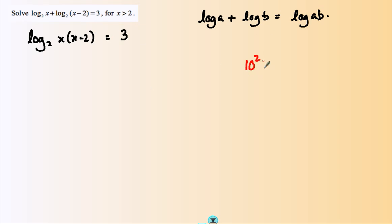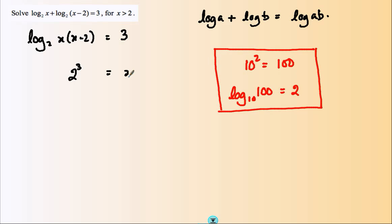I need to remember that logarithms are indices, and I can switch these things around. For example, logarithm to base 10 of 100 equals 2. These are equivalent expressions. A neat way of remembering how to switch it: 10 squared is 100. If I apply the same rule to this, we get 2 to the power of 3 equals x times (x minus 2).